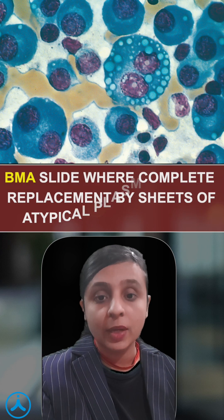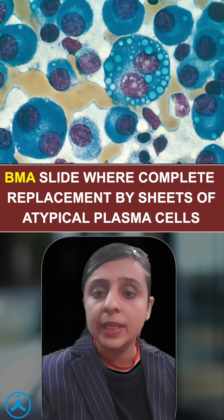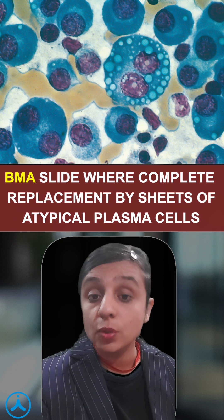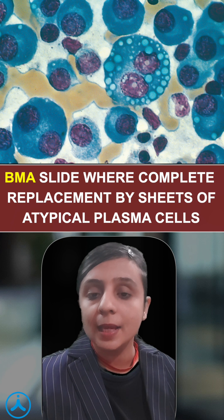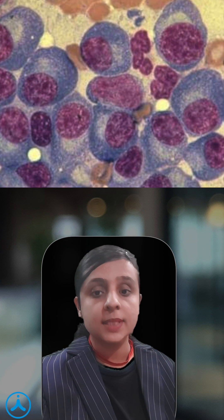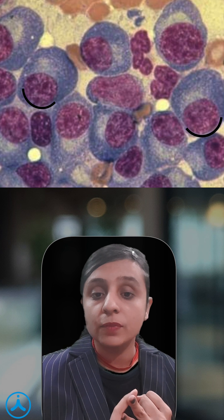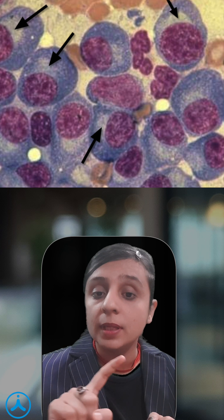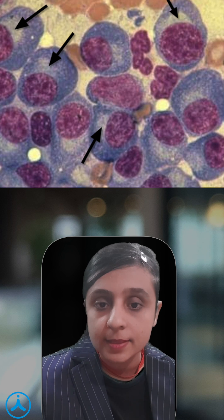Next we can see a bone marrow aspiration slide where complete replacement of the normal underlying bone marrow elements is seen with these abnormal plasma cells. Now how do you identify plasma cells? They are characterized by an eccentric nucleus along with the presence of a perinuclear halo, which is formed due to the underlying Golgi apparatus.